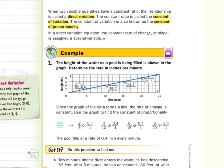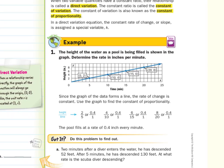In our first guided example, the height of the water as a pool is being filled is shown in the graph. Determine the rate in inches per minute. Since the graph of the data forms a line, the rate of change is constant. Use the graph to find the constant of proportionality. We'll look at 2 over 5, which is 0.4 over 1, or 4 tenths over 1. 4 over 10 is 4 tenths over 1. 6 over 15 is 4 tenths over 1, and 8 over 20 is 4 tenths over 1. Notice all of these were y over x. So the pool fills at a rate of 4 tenths each every minute.